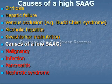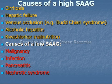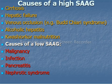A high serum ascitic albumin gradient, or transudate sample, suggests the presence of portal hypertension, which may be caused by cirrhosis, hepatic failure, venous occlusion, alcoholic hepatitis, and kwashiorkor malnutrition.